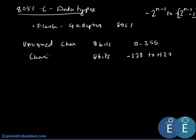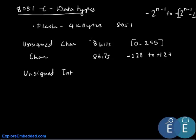When using counters or timers, we need to be careful when declaring variables as unsigned char or char because the range only goes from 0 to 255. If variables exceed 255, we need a larger data storage unit. In that case we use unsigned int, which on the 8051 is 16 bits, giving a range of 0 to 65535.